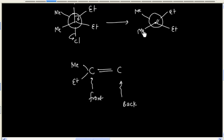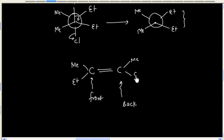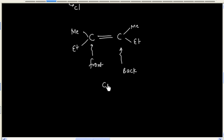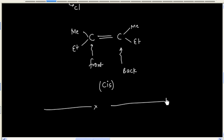The two methyl groups are on the same side — on both the front carbon and the back carbon, the methyl groups are on the same side. So we put the methyl group here, and the ethyl groups are also on the same side. Therefore, in this case, we will have the cis-isomer as the final product. So this is about E2 elimination. One important point: E2 elimination follows an anti-periplanar transition state, or we can say E2 elimination is anti-elimination.